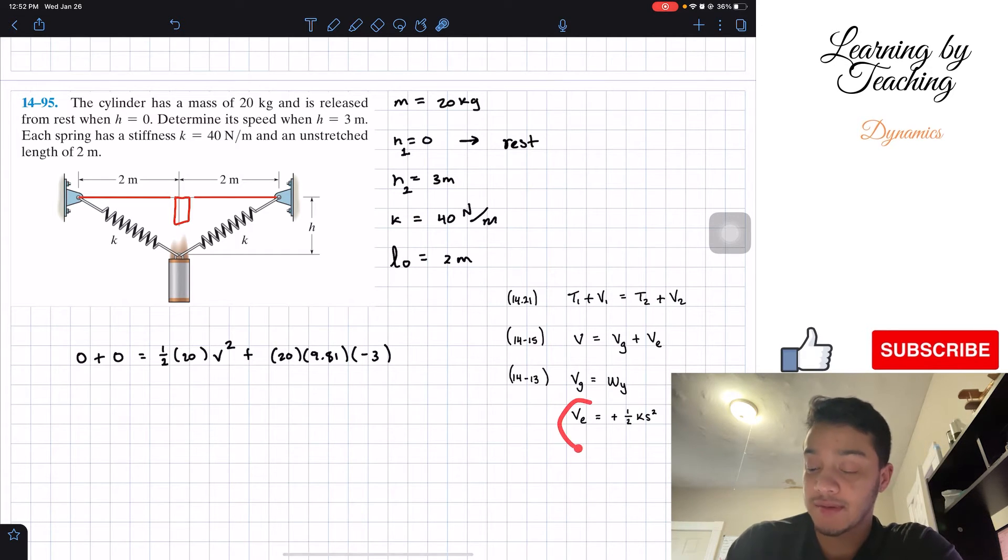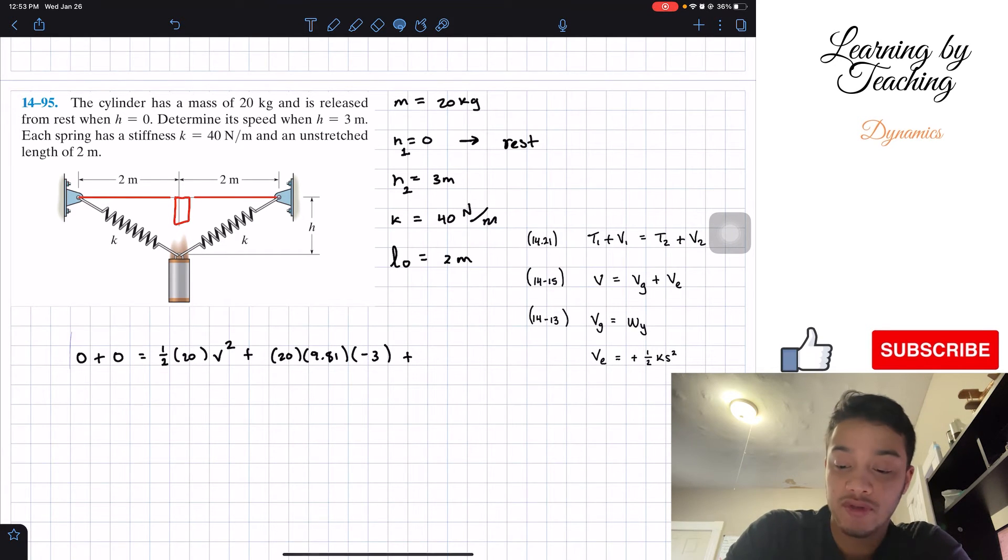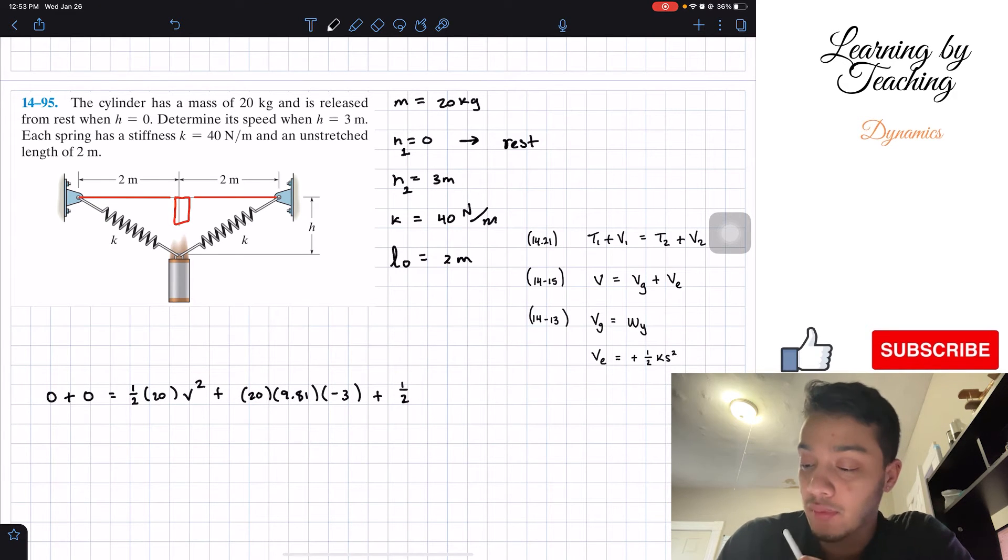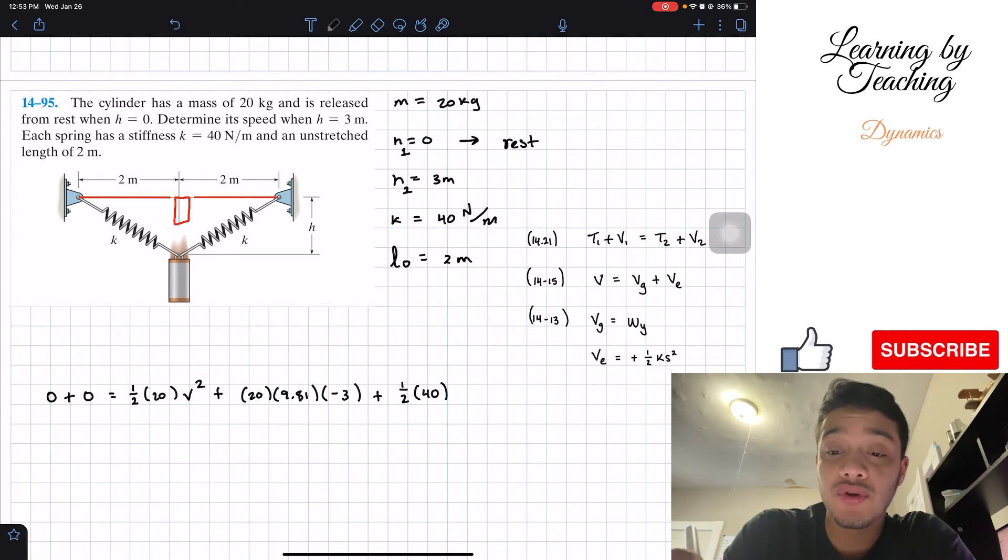Now we need to find our elastic potential. We're going to follow the formula. We got plus one half times k, well k equals 40, times s squared. Now, what is this s? s is the stretch length, not the unstretched length, it's the stretch length. So in order to know that, we need to know how much is this length over here. We can do that by applying some Pythagorean theorem. We got the two adjacent and opposite sides of this triangle.